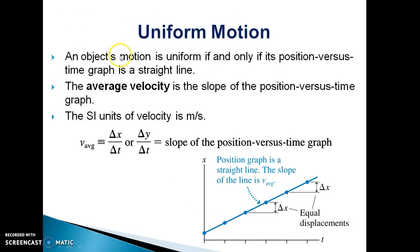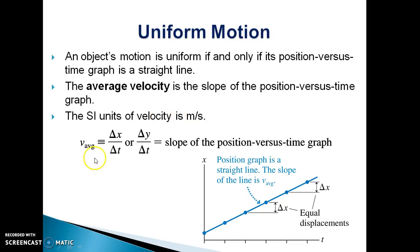An object's motion is uniform if and only if its position versus time graph is a straight line. The average velocity is the slope of the position versus time graph. The SI unit of velocity is meter per second. So average velocity is given by delta x upon delta t, which is the slope of the position versus time graph.